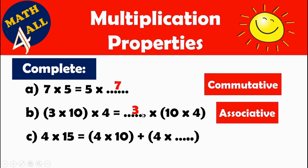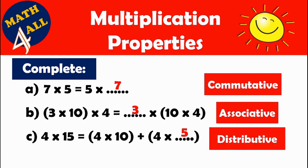Now let's go to example C: 4 by 15 equals 4 by 10 plus 4 by what? As you see, you break 15 into 10 and 5. This property is called the distributive property. We use this property to break large factors into smaller factors — it makes the multiplication easier. And this was our lesson, thank you.